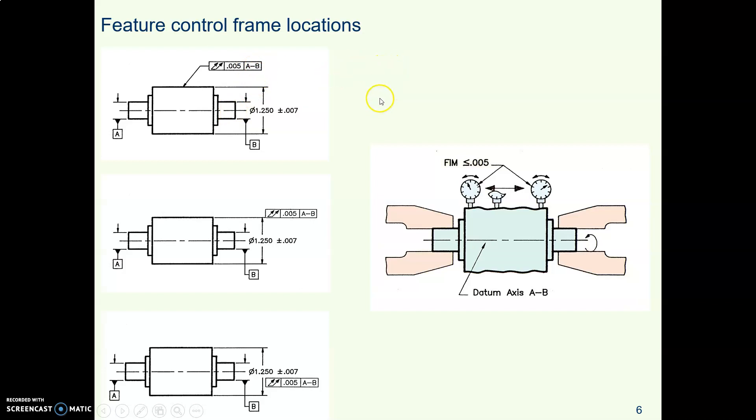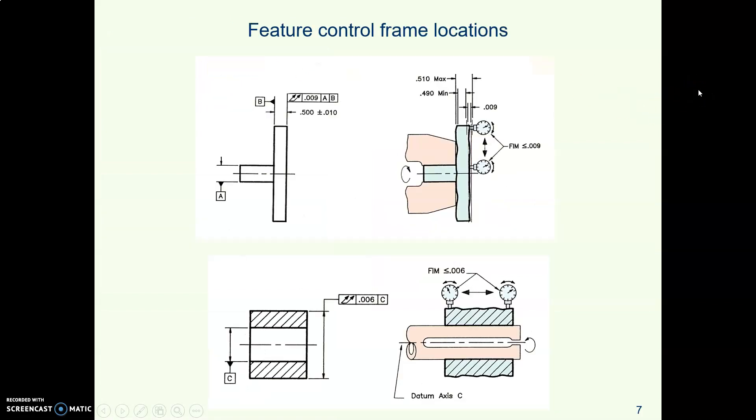We're seeing three different iterations of the part on this slide because they are showing us three possible places we could put the feature control frame. We could attach it to a leader and point at the surface, we could stick it to an extension line off the surface, or we could put it with the diameter dimension. That's what's unusual about runout. You can stick it to a surface or a feature of size dimension. It's all good. However, runout always means contact the surface.